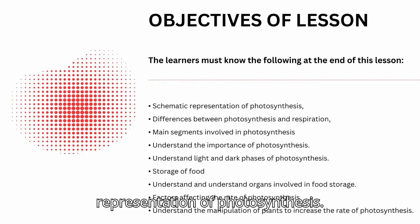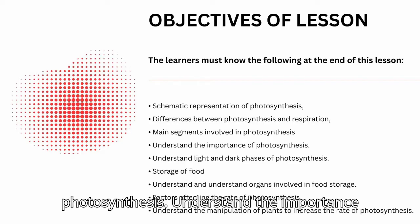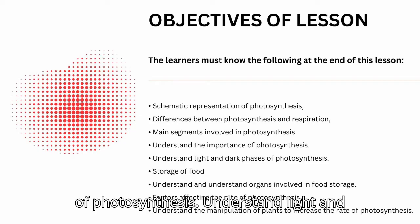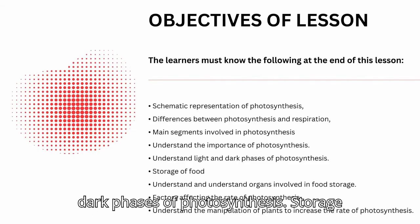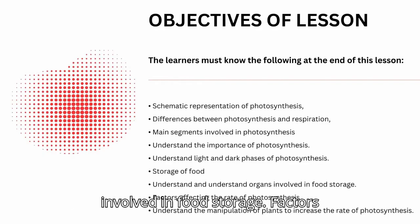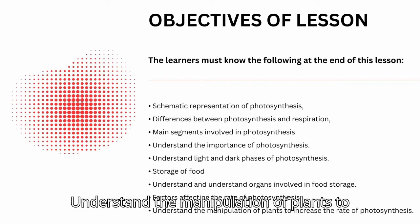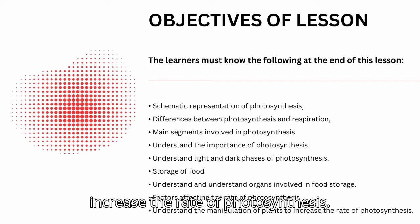Schematic representation of photosynthesis. Differences between photosynthesis and respiration. Main segments involved in photosynthesis. Understand the importance of photosynthesis. Understand light and dark phases of photosynthesis. Storage of food — understand the organs involved in food storage. Factors affecting the rate of photosynthesis. Understand the manipulation of plants to increase the rate of photosynthesis.